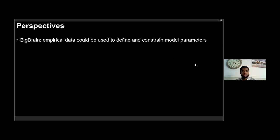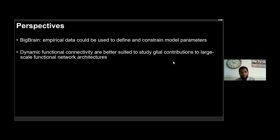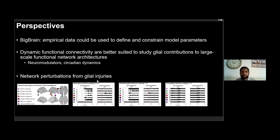As perspectives, we propose that features derived from big brain data could be used to structurally and physiologically constrain the model of whole-brain dynamics, since today these models assume homogeneous parameters for all brain regions without a way to define or constrain them. We also propose that dynamic functional connectivity, rather than static functional connectivity, is better suited to study glial contributions to large-scale functional network activity, especially given that glia operate at totally different temporal scales. Additionally, studies of network perturbations due to glial injuries could be performed, for example in the context of Alzheimer's disease.